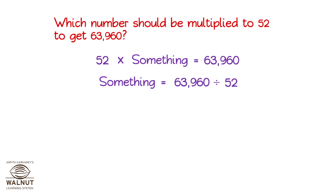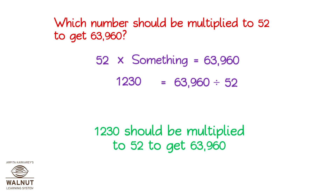Let us bring our answers here. We write the quotient in place of something — that is the number which should be multiplied. 1,230 should be multiplied to 52 to get 63,960.